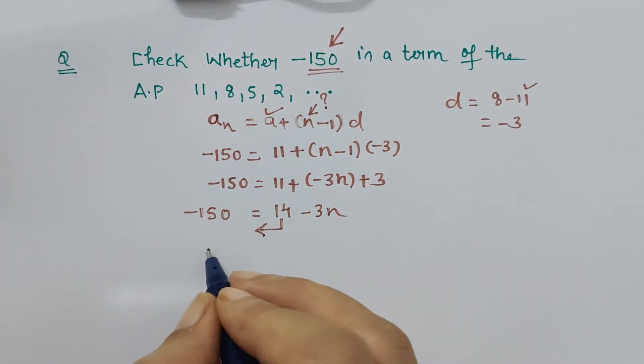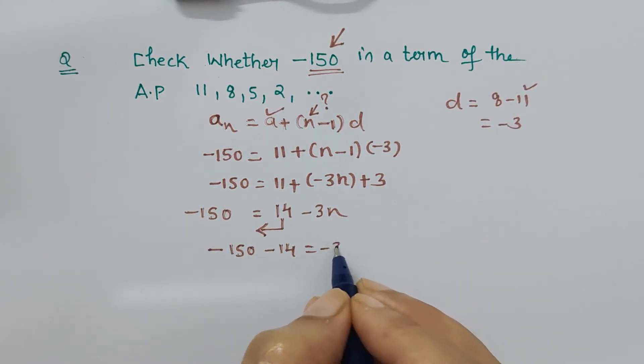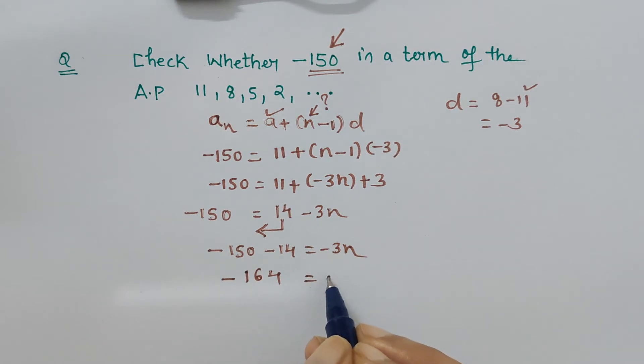Now let's shift this 14 to the left hand side, so we get -150 minus 14 equals -3n. And what it gives? It gives -164 and -3n, so the negatives cancel. 164 upon 3 equals n.